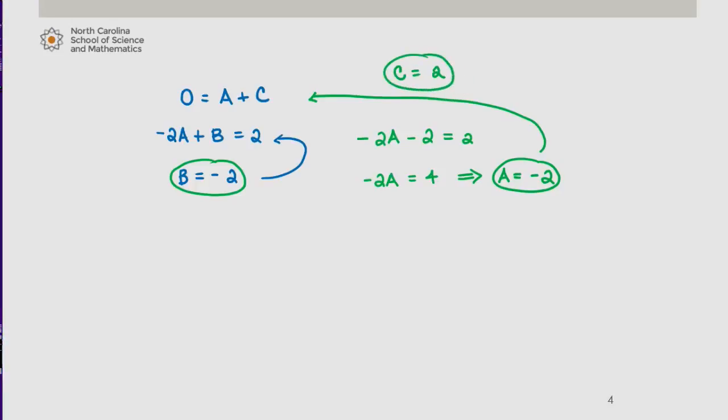As a result, we know that 2x plus 4 over x squared times x minus 2 is equal to negative 2 over x, plus negative 2 over x squared plus 2 over x minus 2.